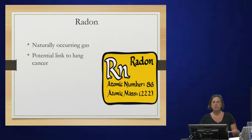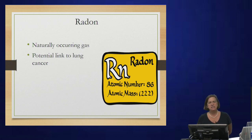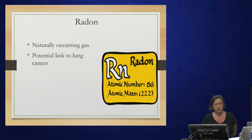Radon is an odorless, colorless gas that is naturally occurring and occurs as radioactive materials break down. It didn't present much of a problem until we became concerned with energy-efficient buildings — buildings were made tighter with less air exchange. The only way to know if you have radon in a building is to test for it. There is a potential link to lung cancer. To fix it, increased ventilation reduces radon levels — I open windows periodically to let fresh air in.